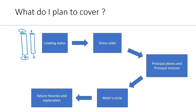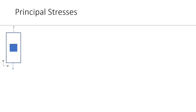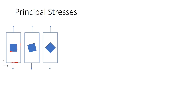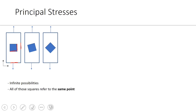We have completed the stress state, and I'll now discuss principal planes and principal stresses. Consider the structure loaded in tension. While deriving the stress state, I took the square whose edges were parallel to the edges of the structure. We can actually take squares that are rotated, and depending on the rotation, we have infinite possibilities. One important point is that all these rotated squares refer to the same point.